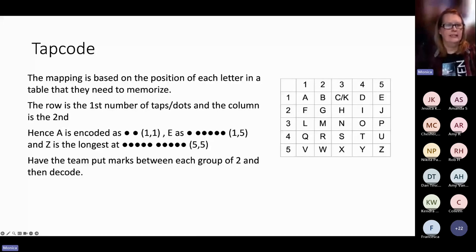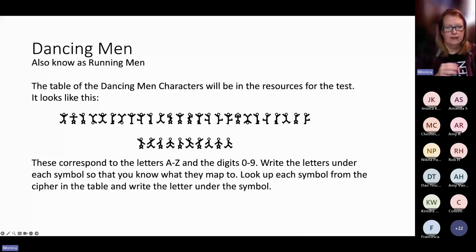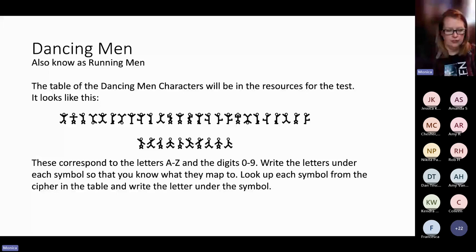The new cipher this year is called Dancing Men. The table is given to them — it'll look just like this with all the little men. This shows A through Z and then numbers. Basically the code is a bunch of these little figures and they have to look up each figure to find what letter it corresponds to. It can be time consuming to look them all up, so I always recommend that students doing these should memorize the most common letters so they don't always have to look those up.